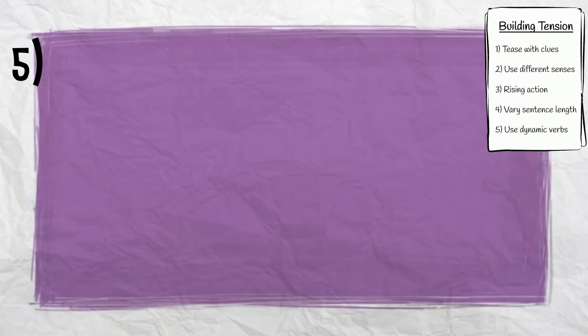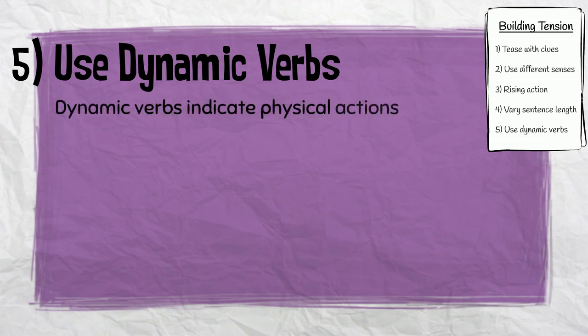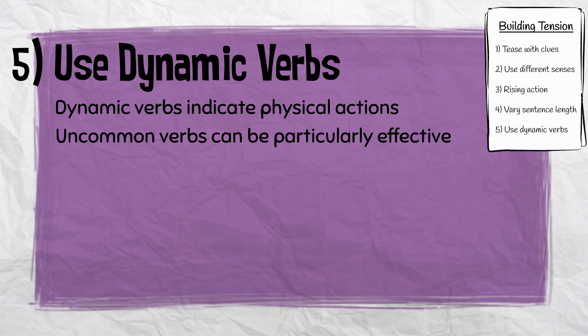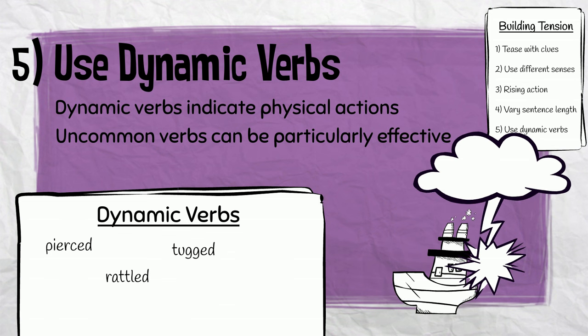Number five: use dynamic verbs. Dynamic verbs indicate physical actions. Carefully choosing dynamic verbs can make a big difference in the level of tension we're able to create in a story. Uncommon verbs can be particularly effective. For example, the following dynamic verbs could be used to great effect in our story: pierced, rattled, tugged, grasped, burst, shattered.